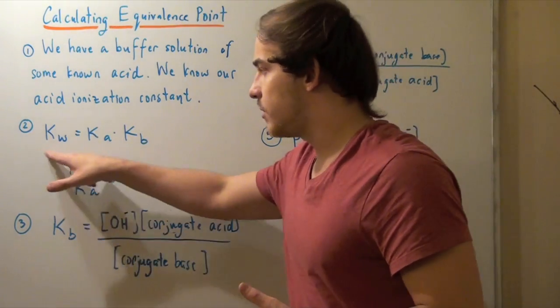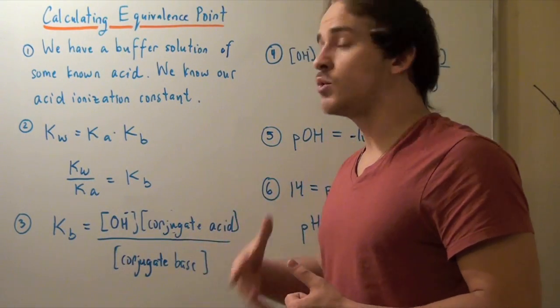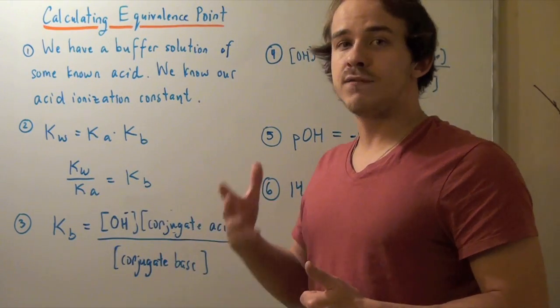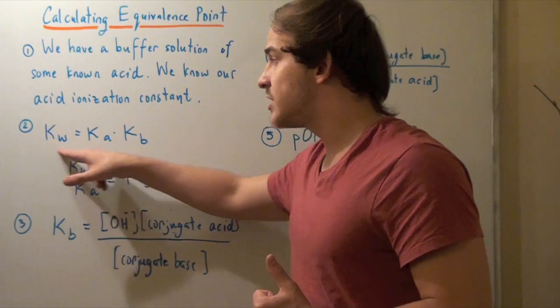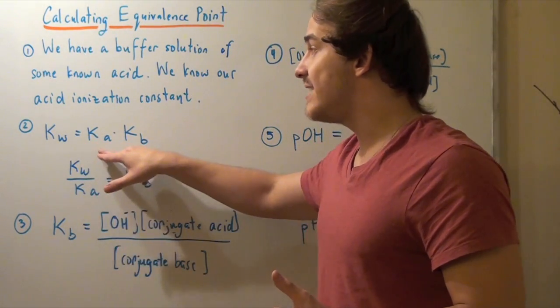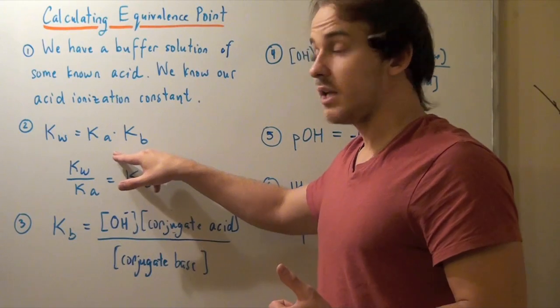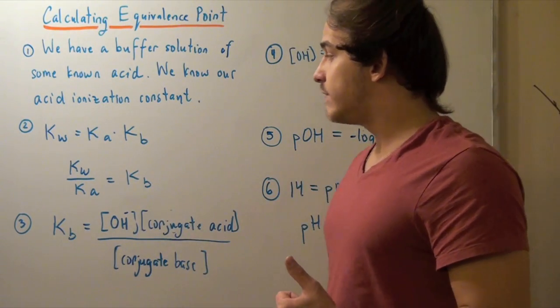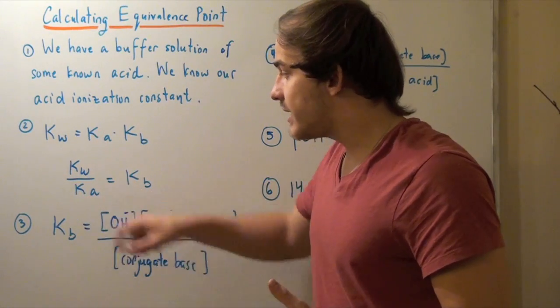Well, Kw, something we know at some given temperature, at 25 degrees Celsius, Kw is 10 to the negative 14. It's the ionization constant of water. Now, this equals Ka, something we know, times Kb. So we find Kb by simply dividing Kw by Ka.